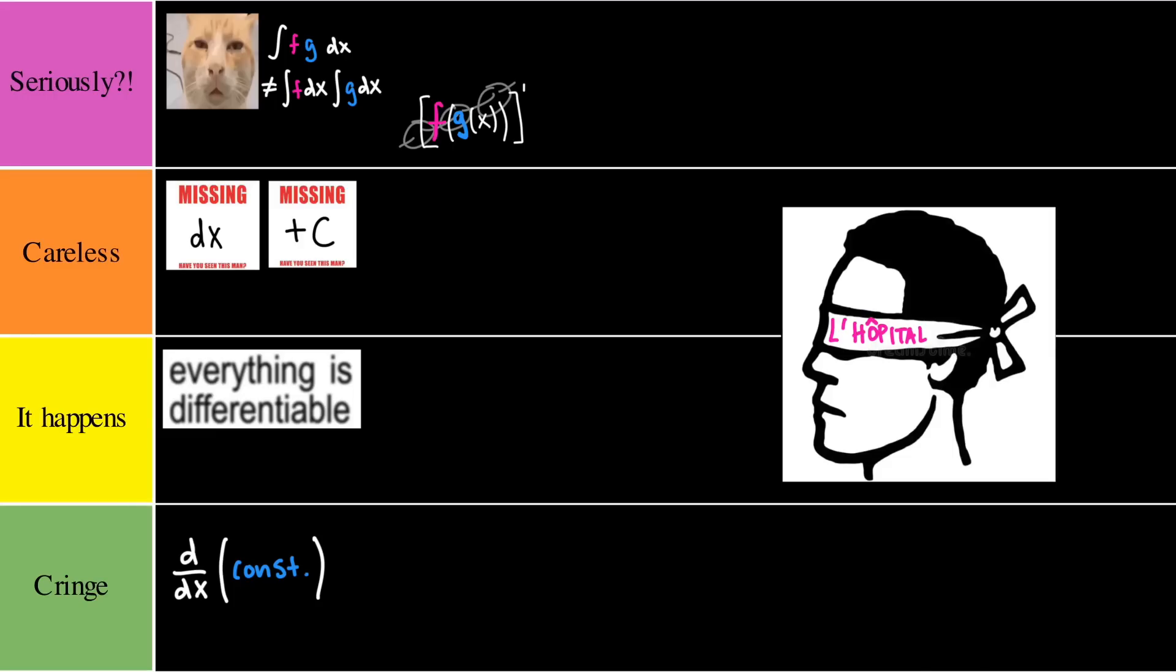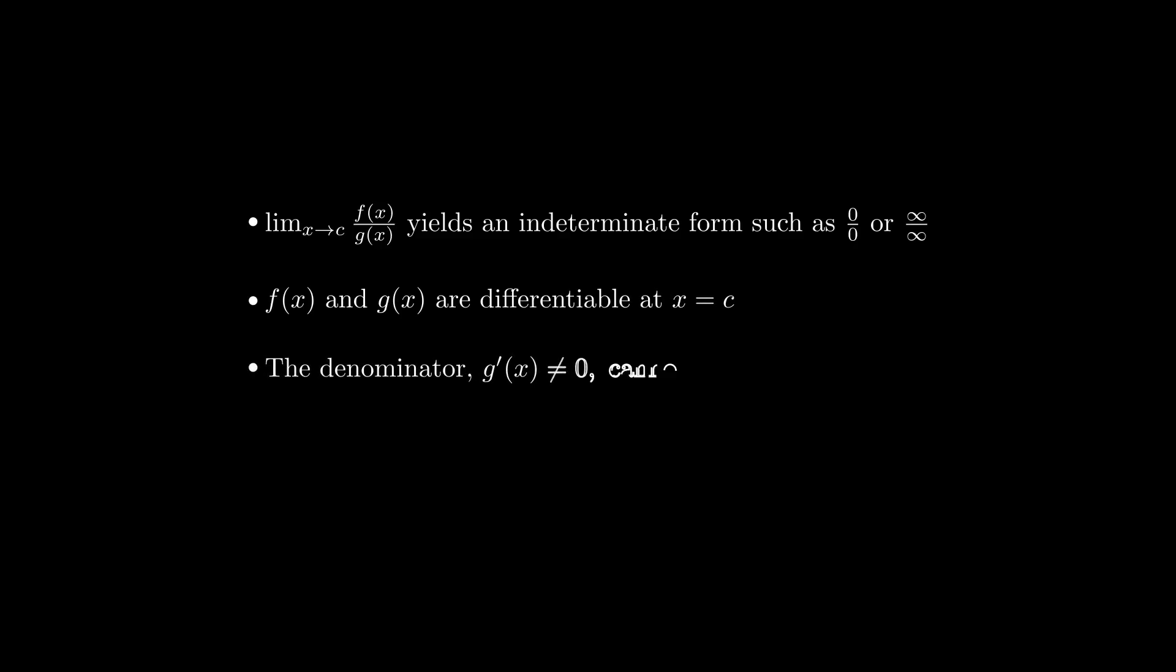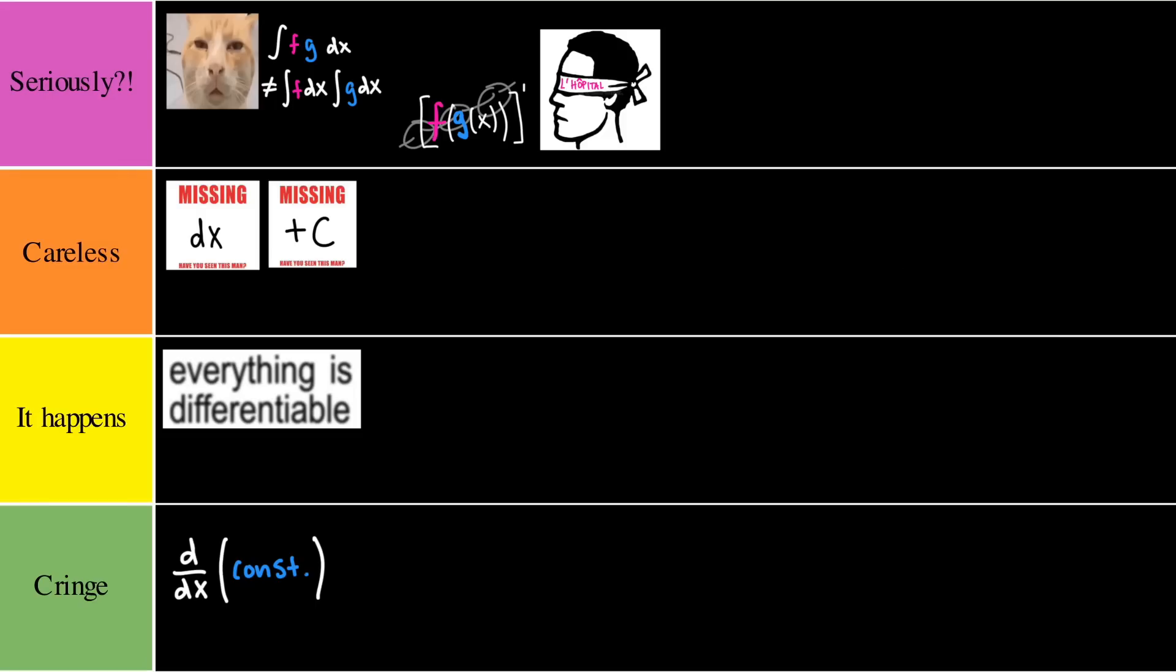Next up, we have something I like to call blind L'Hopital. Now this one just feels like you want to take the easy route. You learn this tool and think to yourself, I can solve all limits like this. You differentiate your numerator and denominator and find a limit. Simple right? No. We need to remember the conditions for L'Hopital's rule. First, the limit has to be in an indeterminate form such as 0/0 or infinity over infinity. Next, the numerator and denominator functions have to be differentiable at x. The derivative of the denominator is non-zero. Lastly, the limit of f prime over g prime exists. When all these conditions are met, we can then apply L'Hopital's rule. Blind L'Hopital would have to go into a seriously tier.